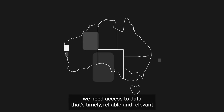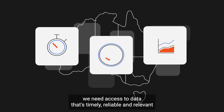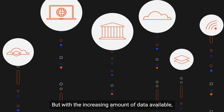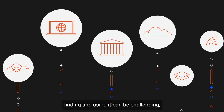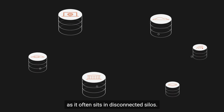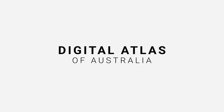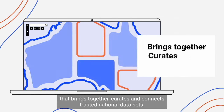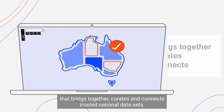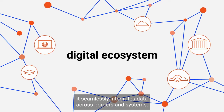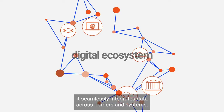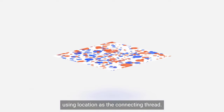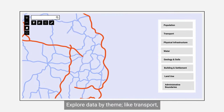To build a brighter future for Australia we need access to data that's timely, reliable, and relevant to make better informed decisions. But with the increasing amount of data available, finding and using it can be challenging as it often sits in disconnected silos. This is changing with the Digital Atlas of Australia — an interactive, secure, and easy-to-use online platform that brings together, curates, and connects trusted national datasets, powered by a digital ecosystem that seamlessly integrates data across borders and systems.